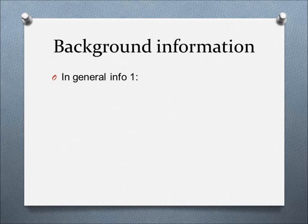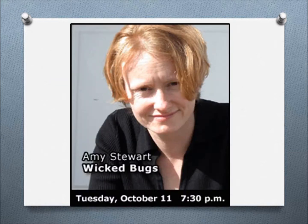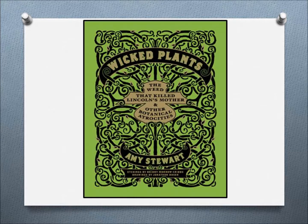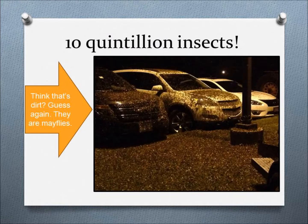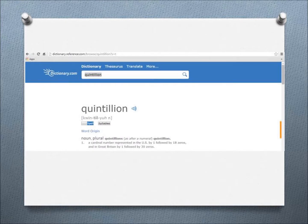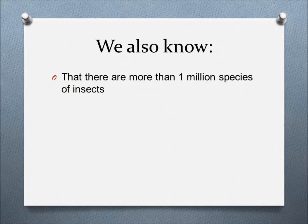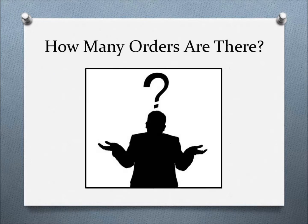In my first General Info video, I mentioned how many insects we believe are on our planet. Amy Stewart, the author of Wicked Bugs and Wicked Plants, said there was an estimated 10 quintillion insects on our planet. A quick internet search shows that a quintillion is a 1 followed by 18 zeros. We also know that there are more than 1 million different species of insects. But how many orders do we have?